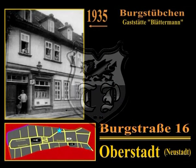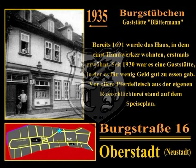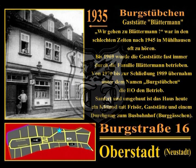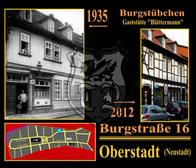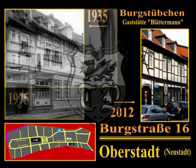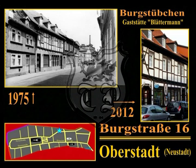Unsere nächste Station ist das Burgstübchen in der Burgstraße 16, früher auch als Gaststätte Blättermann bekannt. Bereits 1691 wurde das Haus, in dem einst Handwerker wohnten, erstmals erwähnt. Seit 1930 war es eine Gaststätte, in der es für wenig Geld gut zu essen gab – vor allem Pferdefleisch aus der eigenen Roßschlächterei. Der Ausspruch 'Wir gehen zu Blättermann' war in den schlechten Zeiten nach 1945 in Mühlhausen oft zu hören. Bis 1969 wurde die Gaststätte fast immer durch die Familie Blättermann betrieben; von 1970 bis zur Schließung 1989 übernahm die HO unter dem Namen Burgstübchen den Betrieb. Saniert und umgebaut ist das Haus heute ein Kleinod mit Friseur, Gaststätte und einem Durchgang zum Busbahnhof.